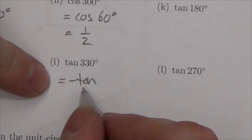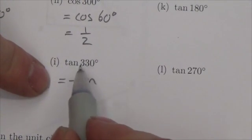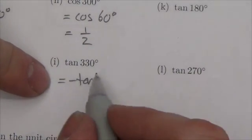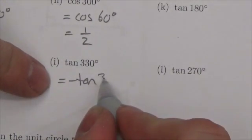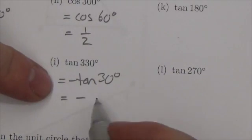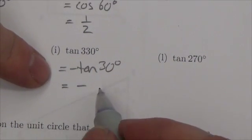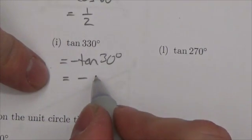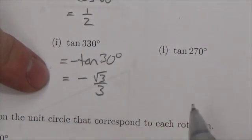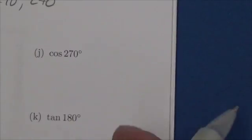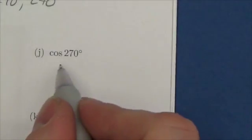Tangent of 330 degrees: 330 is in the fourth quadrant, and tangent is negative there. The reference angle is 360 minus 330 equals 30 degrees. Using the unit circle or special triangles, the tangent of 30 degrees is root 3 over 3, or equivalently 1 over root 3. So tangent of 330 is negative root 3 over 3.